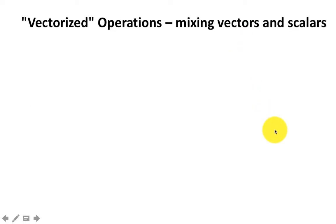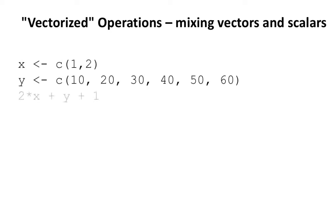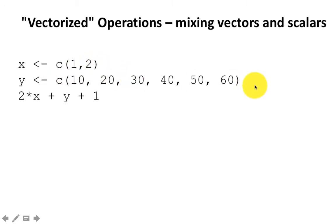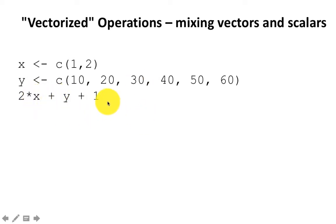We've already seen an example where we could mix vectors and scalars — for example, weights times 2, where weights was a vector and 2 is just a scalar. Here's one more example that combines recycling and mixing vectors and scalars. So 2 times x: x will become 1, 2, 1, 2, 1, 2 to match the size, and 2 times x multiplies each of those by 2. Then y is just a vector, so it adds that to the result, and then 1 is added to every element. So you're mixing vectors and scalars and also doing recycling, and all of this works perfectly fine.